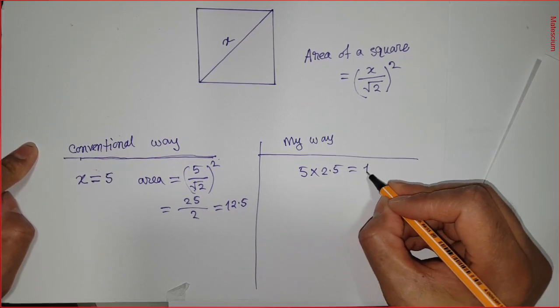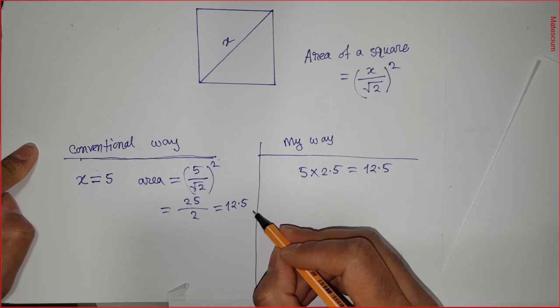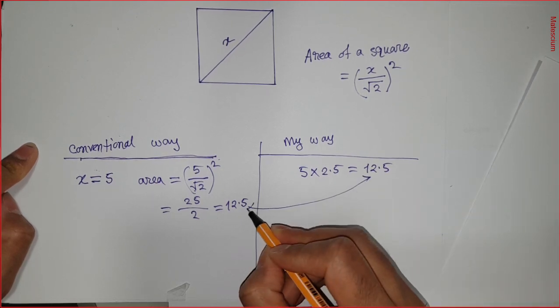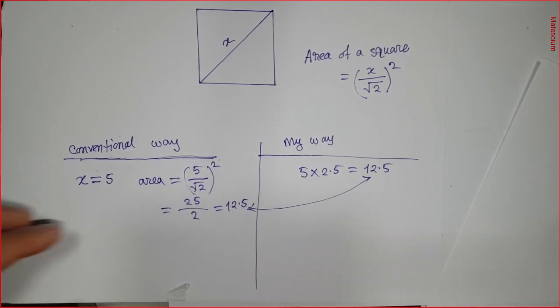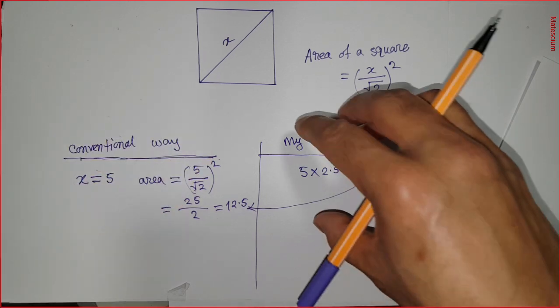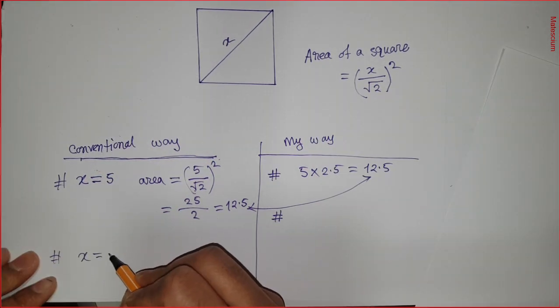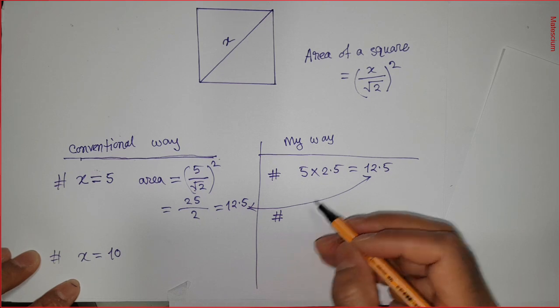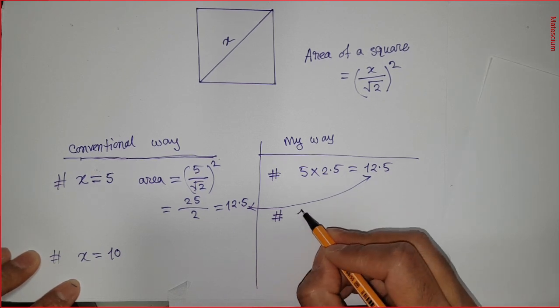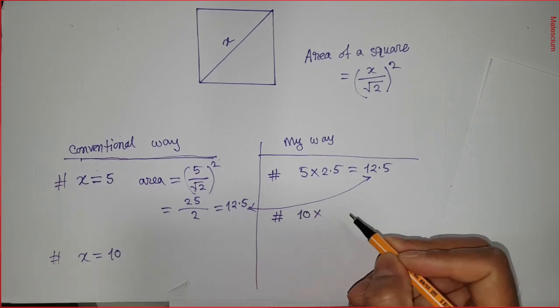And multiply this diagonal length by its half. That means half of 5 is 2.5, so 5 times 2.5, which equals 12.5. That is the same answer. So tell me, which way is faster - this conventional way that you followed, or my way?